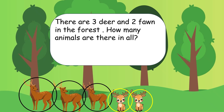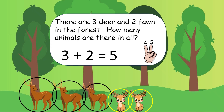We have to add 3 plus 2. Open 2 fingers here and let's count forward from 3: 4, 5. Very good. So, the answer is 5. There are 5 animals in all.